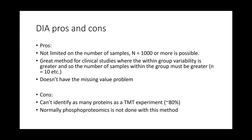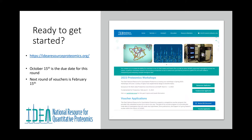DIA also doesn't have the missing value problem. Because of how the data is collected using a reference library, if we're going to see the peptides, we'll see them in every one of the samples — it's very robust. The cons of DIA are that it can't identify as many proteins as a TMT experiment; you get about 80 to 85% for the same amount of instrument time. Additionally, phosphoproteomics is normally not done with this method.